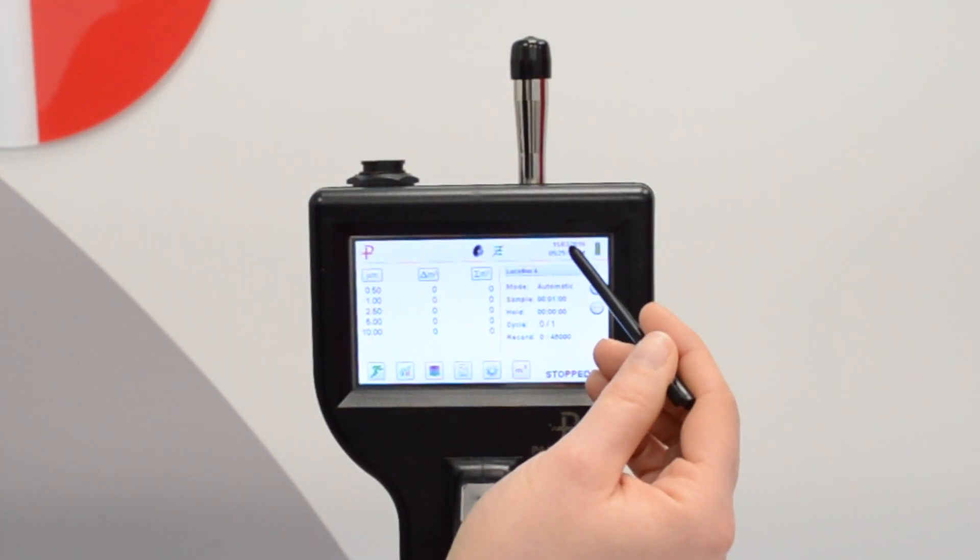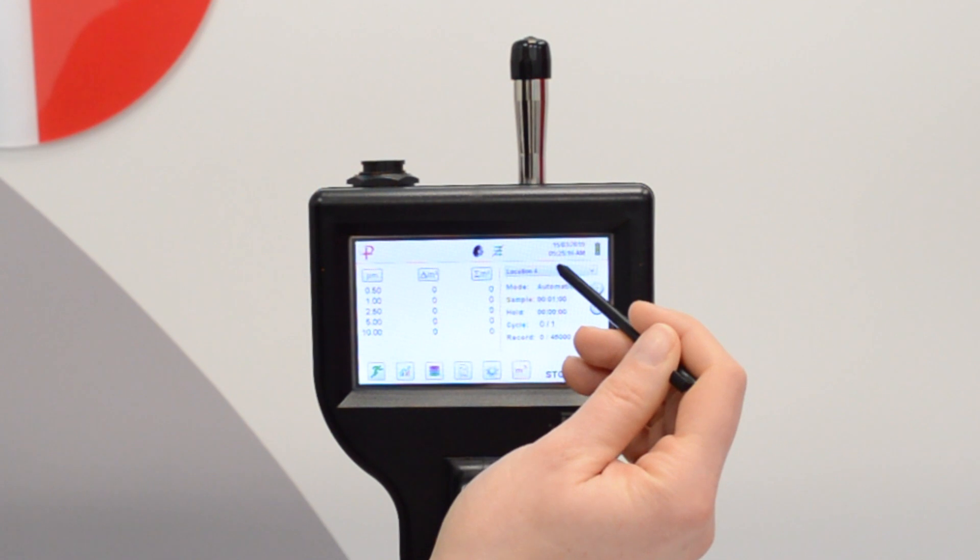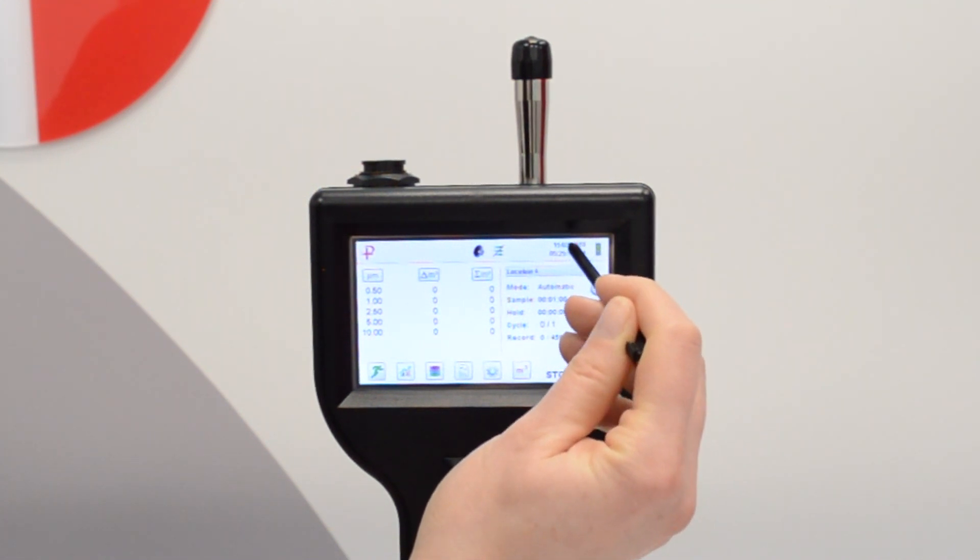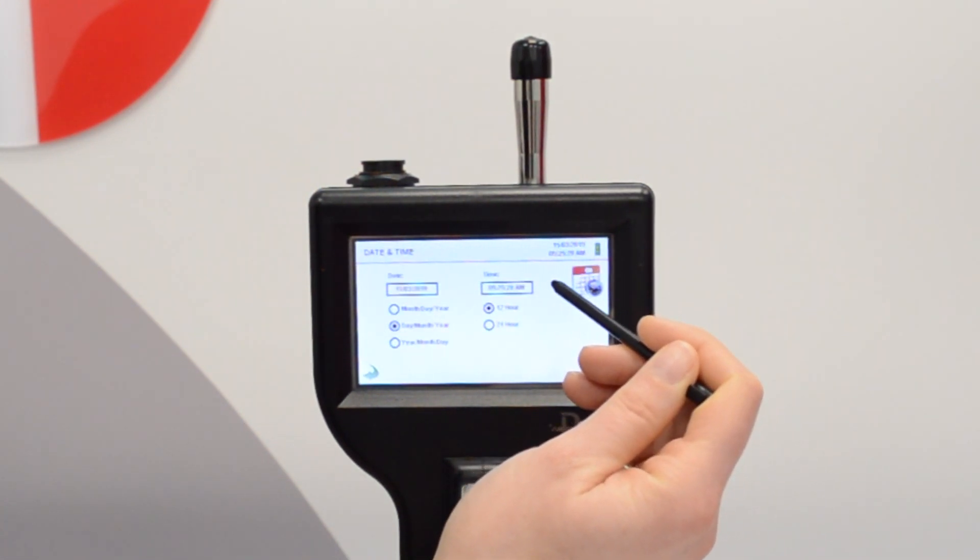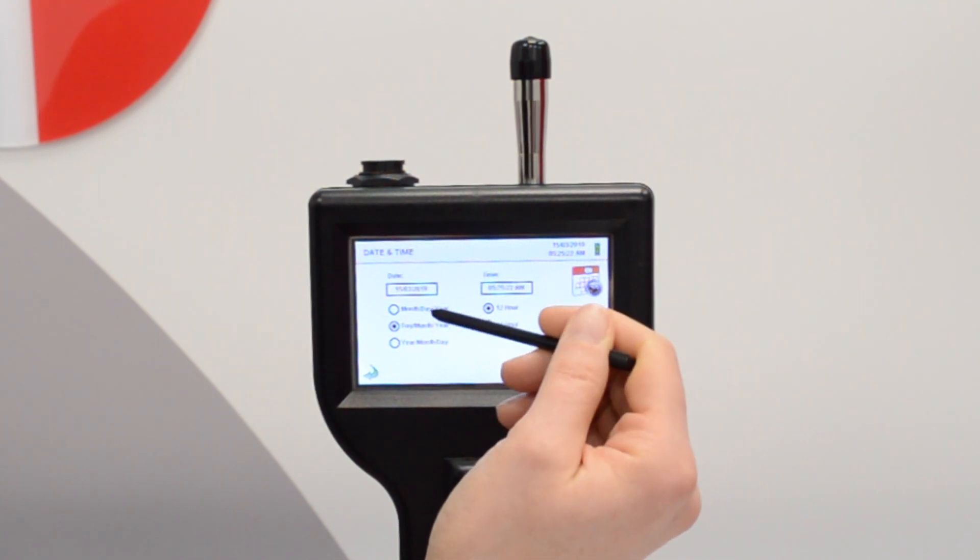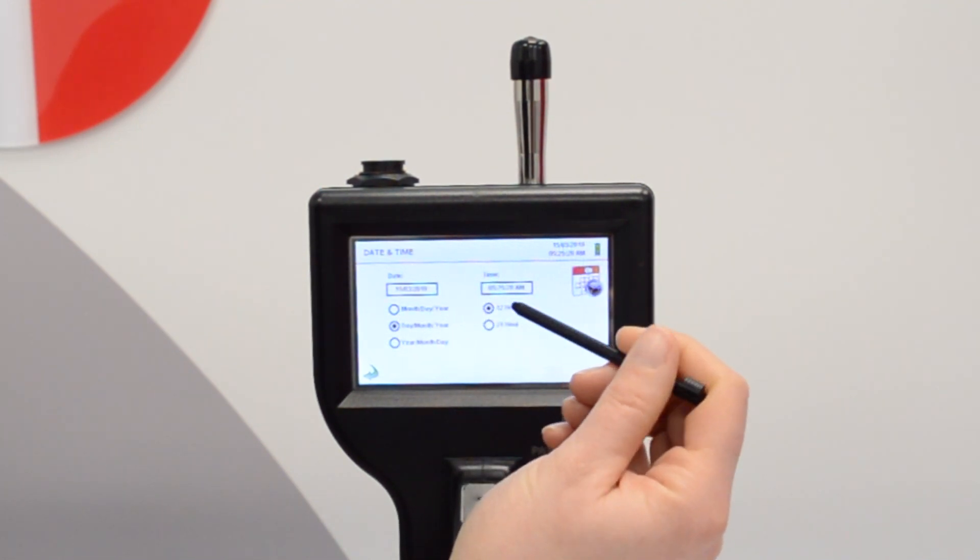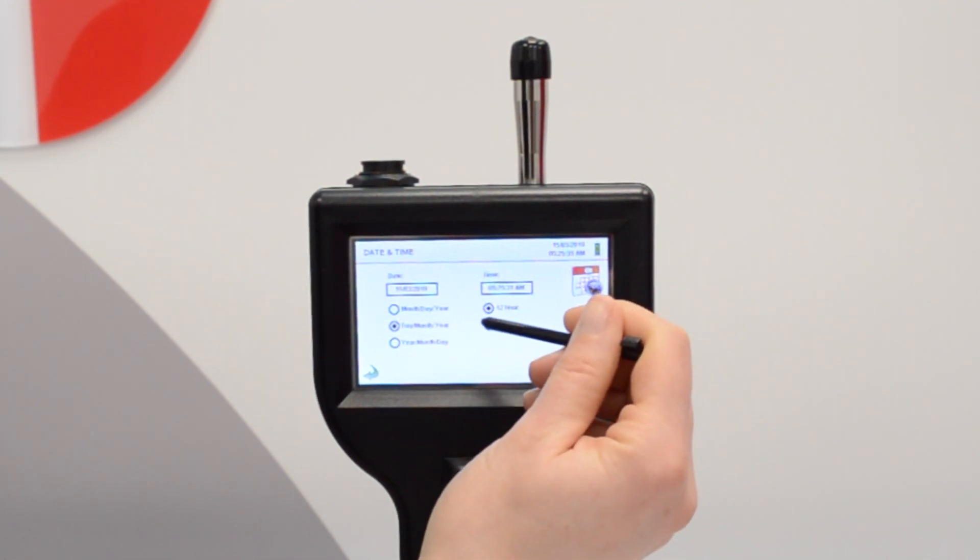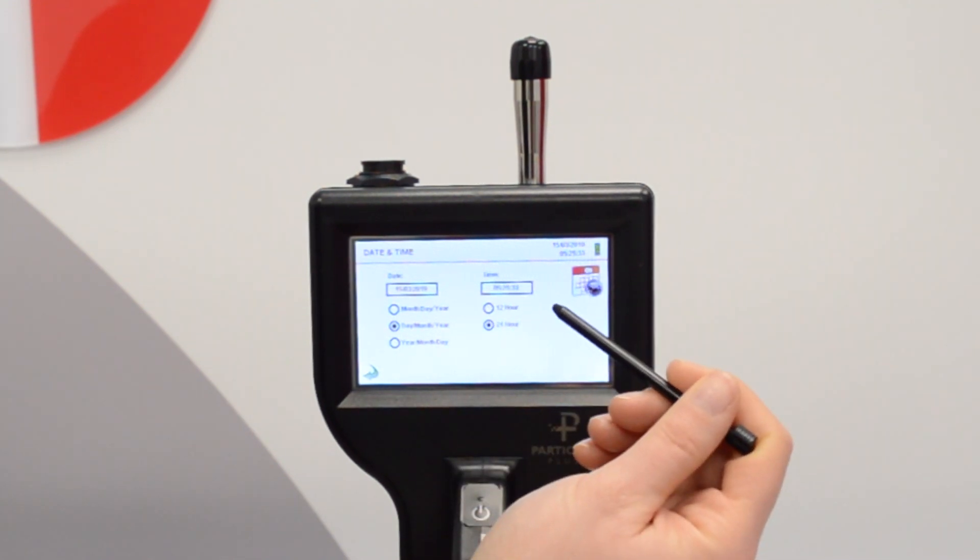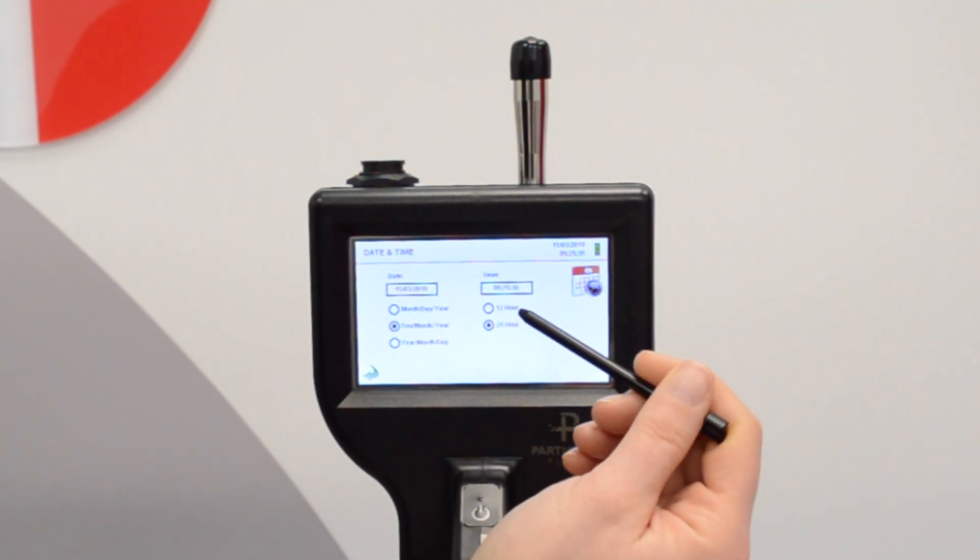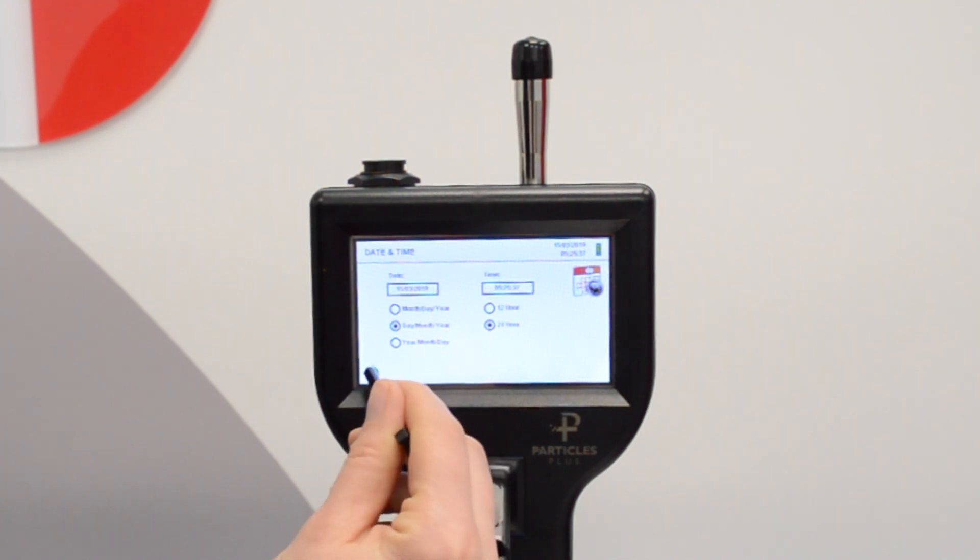Importantly you need to set your date and time. This will mean that the time and date stamp will be correct on any readings you take. Just tap on the date and time field and you are taken to the setup screen. You can change the date format to whichever one feels most intuitive to you. Likewise you can select the time field to be displayed in a 12 hour or 24 hour format. Once you've made the selections you need, click back to return to the home screen.